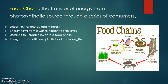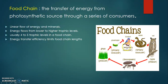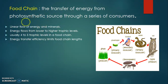It always goes from bottom to top. Primary consumers are at the lower trophic level, and owls are the apex predators or top consumers. Only 4 to 5 trophic levels are present in a food chain — 1, 2, 3, 4, or maximum 5. Energy transfer efficiency limits food chain length.